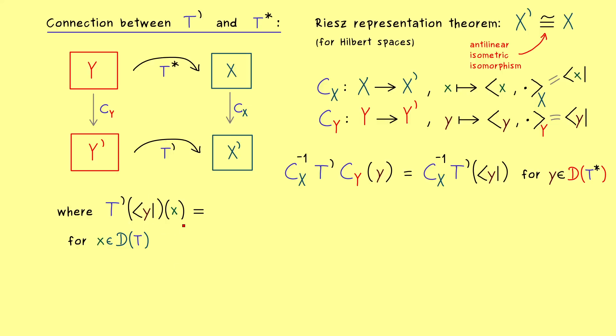However, now the functional is just the inner product, so the whole thing looks like that. And now we can use the fact that y comes from the domain of T*, which means we can pull T to the other side. Hence, there we have T*y on the left-hand side, which means now we have a linear functional in X'.